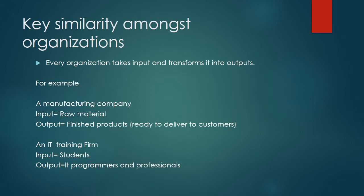What is the key similarity amongst all organizations? Every organization takes input and transforms it into output. For example, a manufacturing company will have input of raw materials and output of finished products ready to deliver to customers. Similarly, an IT training firm will have input of students and the output will be IT programmers and professionals.